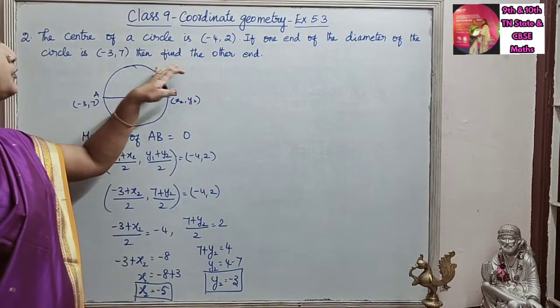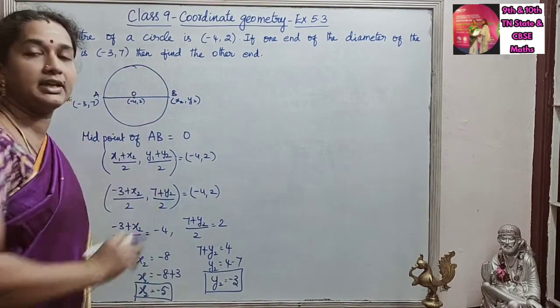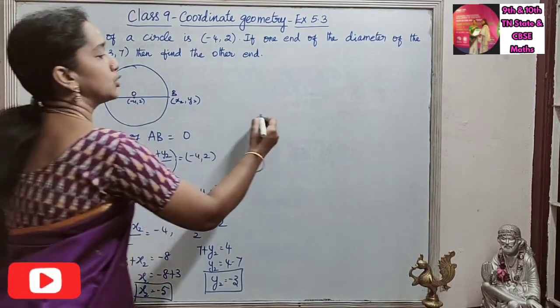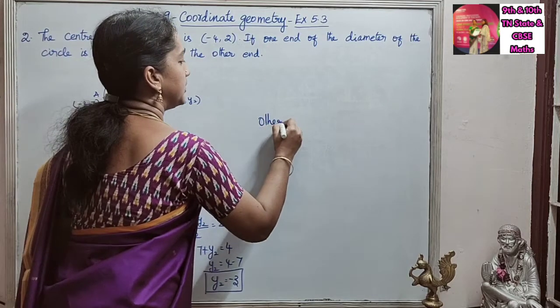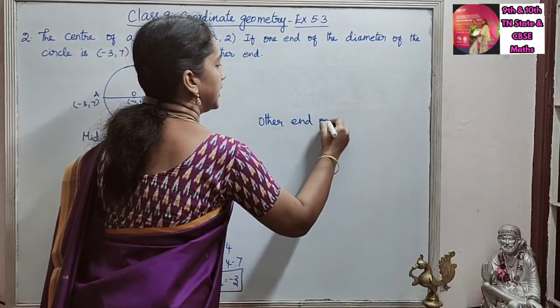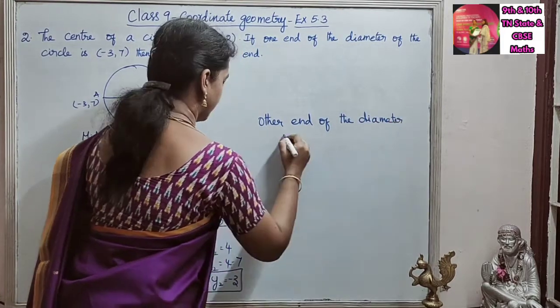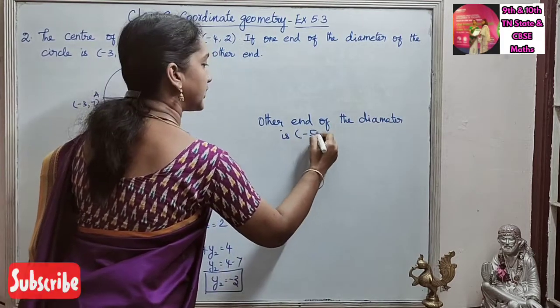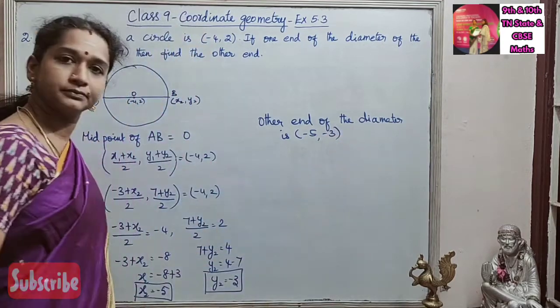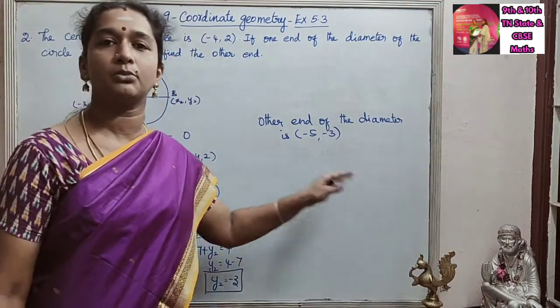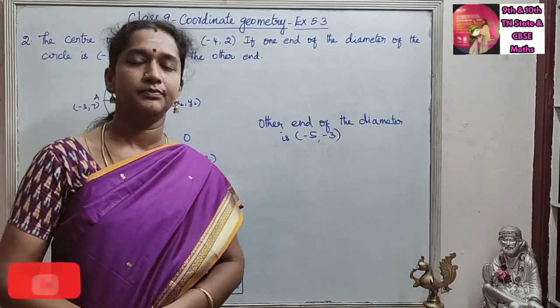So we are asked to find the other end. So other end, we have taken it as B. So other end of the diameter is (-5,-3). So using the midpoint formula, we found the other end. Thank you.